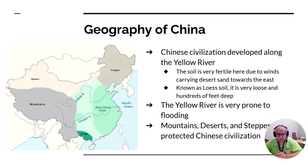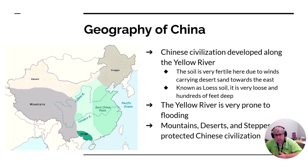Because it's very light soil that's easily blown around, it causes the Yellow River to change course very easily. The Yellow River is also very prone to flooding.